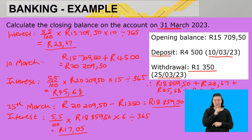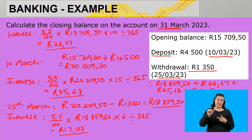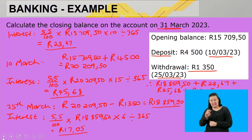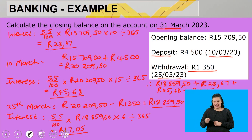So the closing balance is R18,859.50 plus the first interest of R23.67, plus the second interest of R45.68, plus the last interest of R17.05. The closing balance at the end of March 2023 is therefore eighteen thousand nine hundred and forty-five rand and ninety cents.